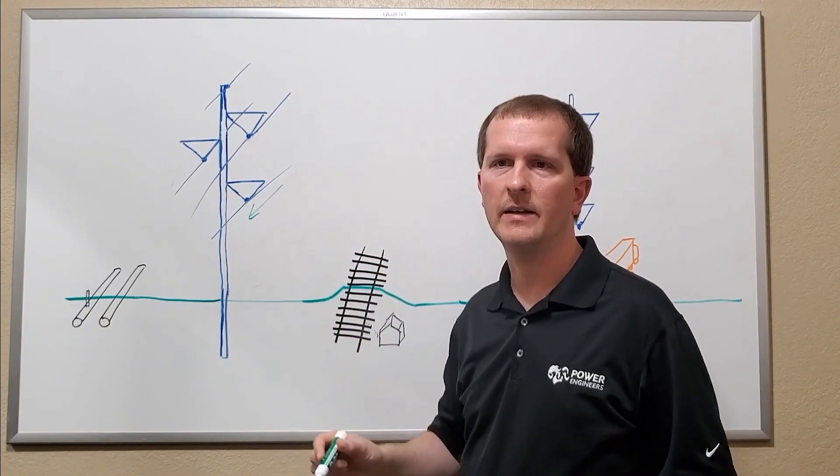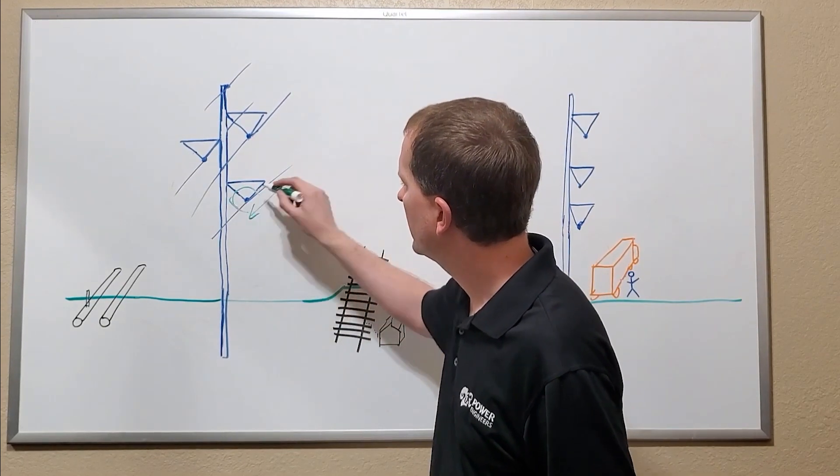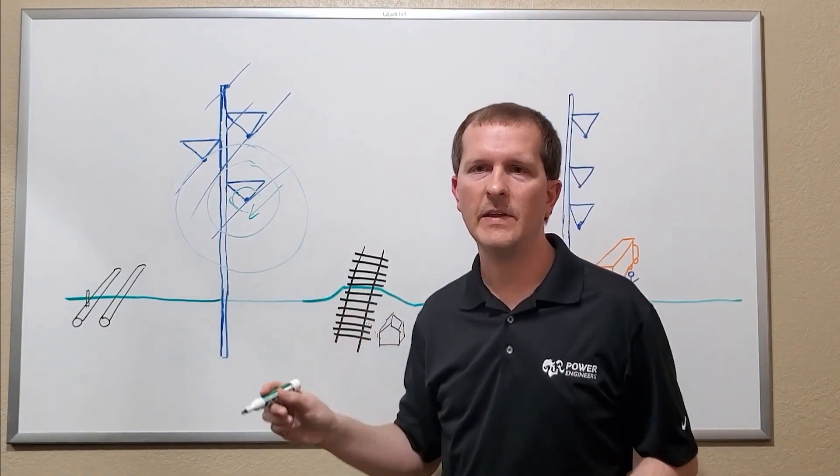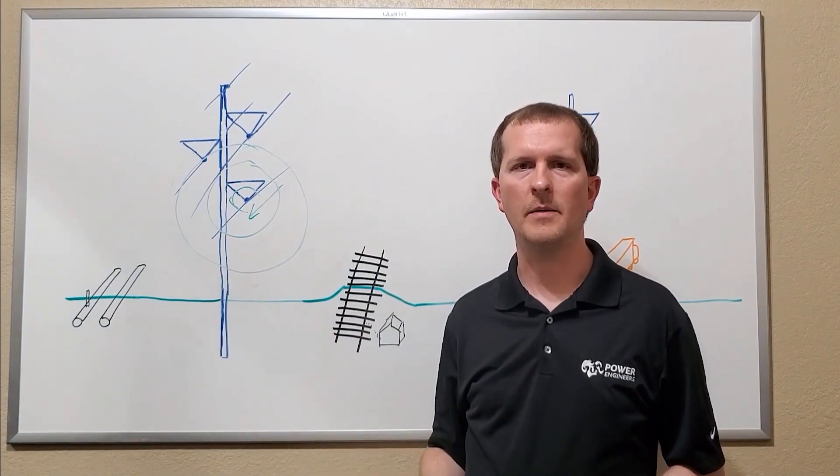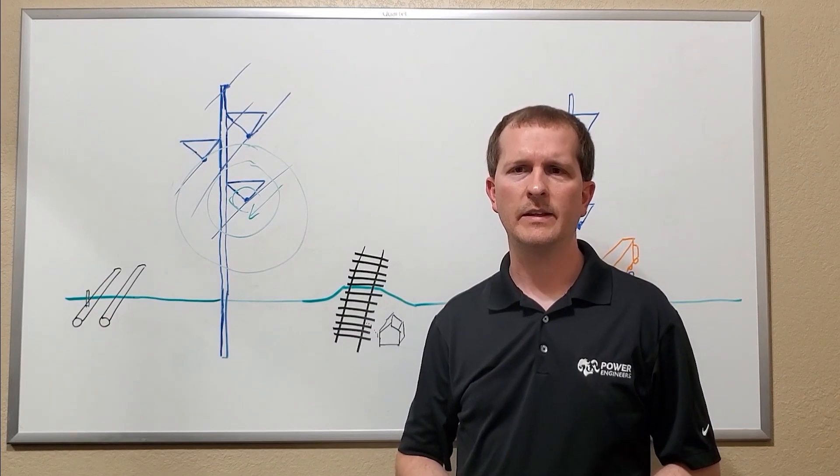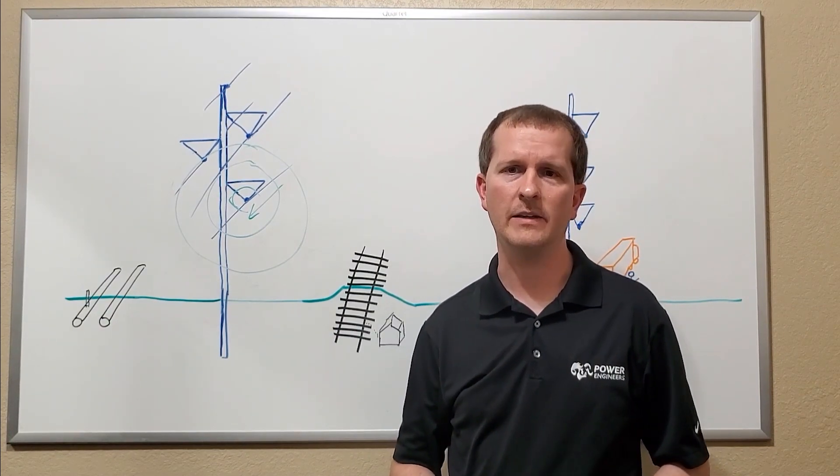For example, as current flows through a transmission line, it will create magnetic fields that radiate out from each of the conductors. These fields can couple onto long parallel objects, such as pipelines and rails, inducing a voltage that can pose a risk to both workers and to equipment.